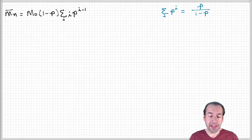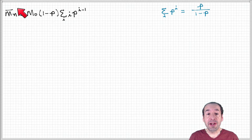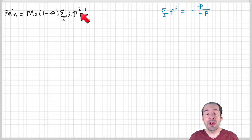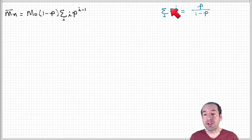We've shown how to calculate in principle the number average molecular weight of a sample using an expression that contains a summation — the sum of i times p to the i minus one, where p is the extent of reaction. This is not convenient to calculate directly, so we'd like to find a simpler expression for this summation.